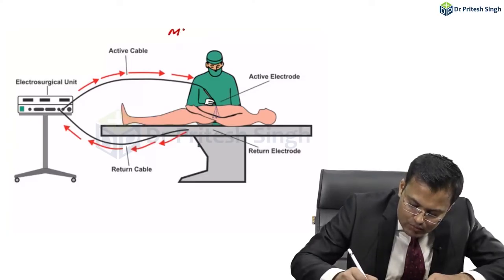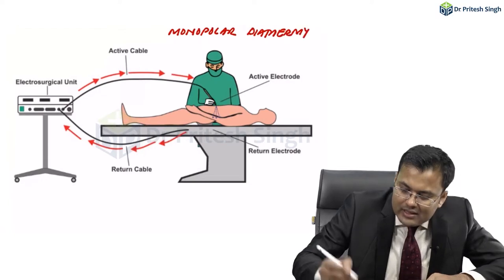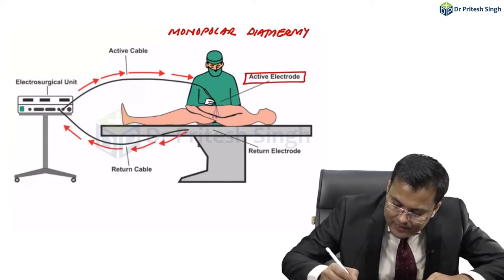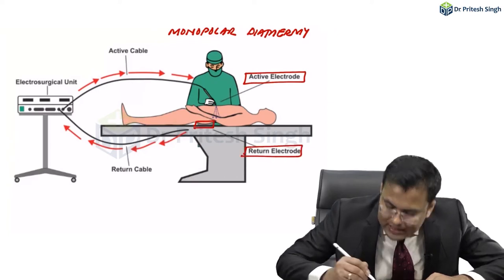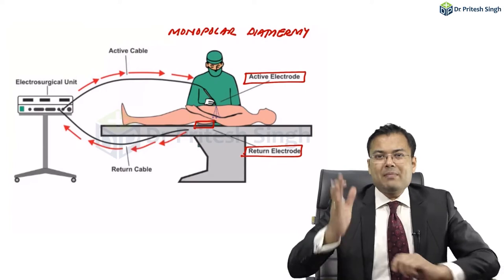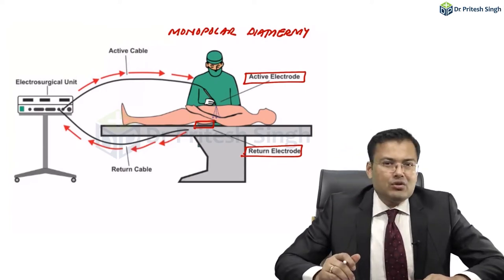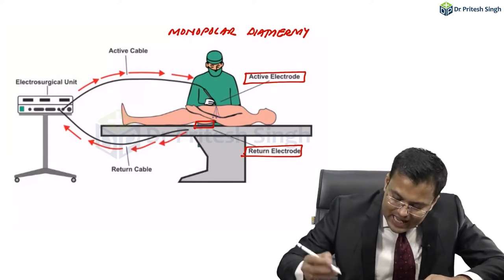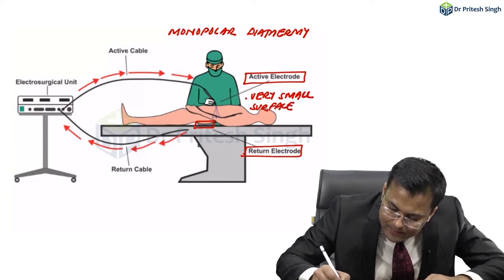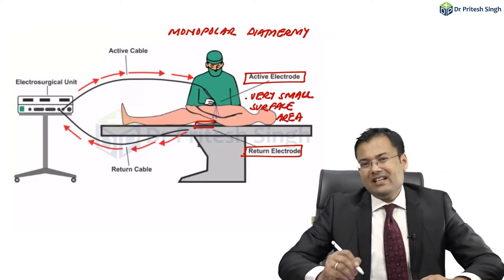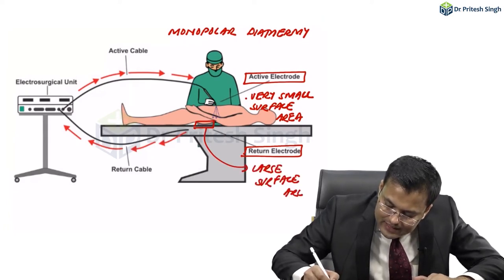This is how monopolar diathermy works. There is one active electrode and this is the passive or return electrode. You have seen in OTs we apply cautery pad, that is the return electrode or passive electrode. This active electrode has a very small surface area compared to the return electrode. The return electrode has a large surface area.